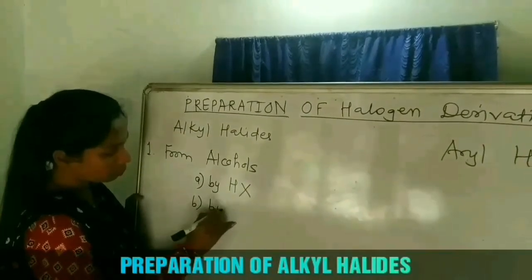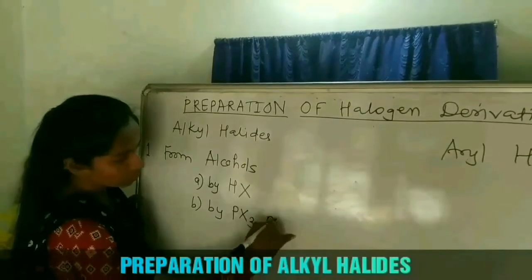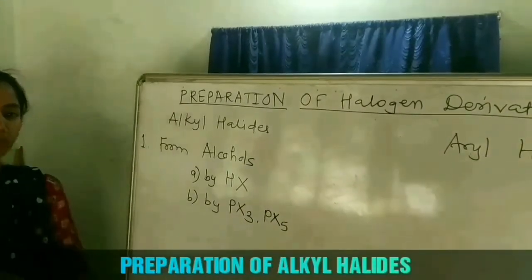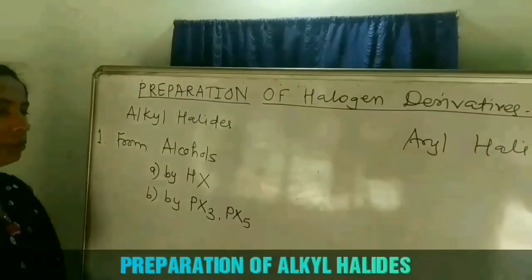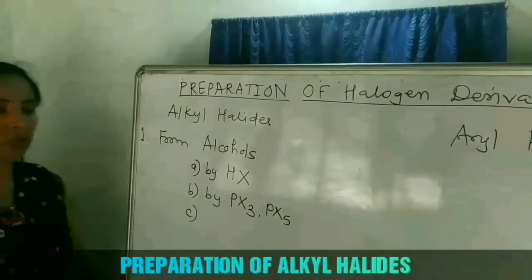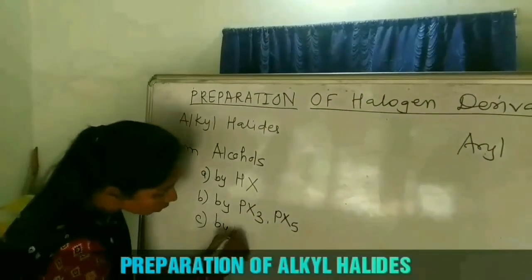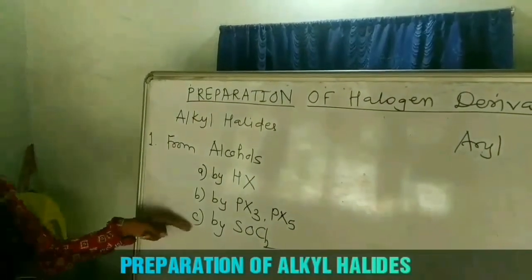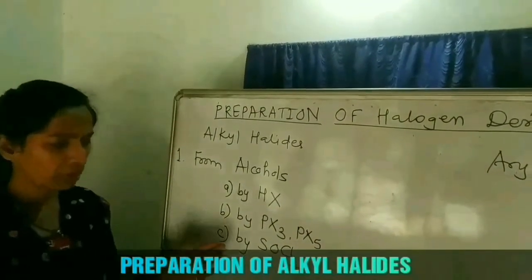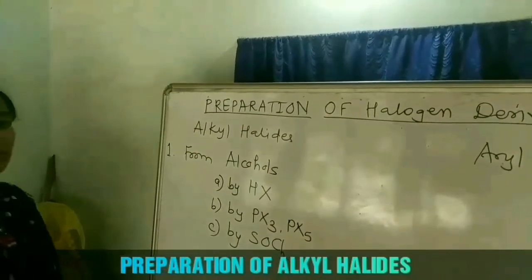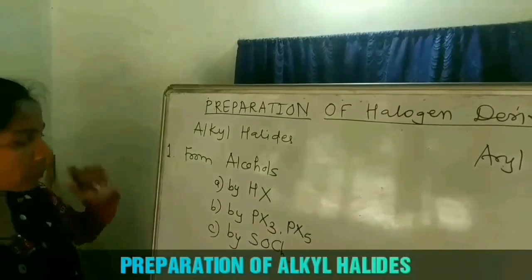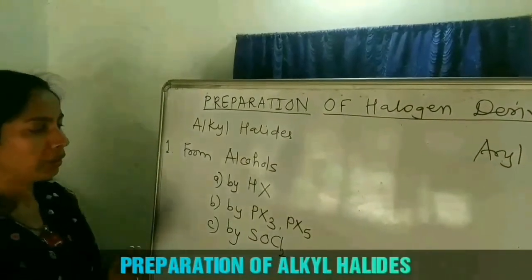The second method is by using phosphorus halides — phosphorus trihalide or phosphorus pentahalide. Alcohol can also be converted into alkyl halide using phosphorus halides. In the third method, alcohol can be converted into alkyl halide by using thionyl chloride, which is SOCl2. This is considered the best method for the preparation of alkyl halides from alcohols, because the byproducts formed are gases and can be easily separated.